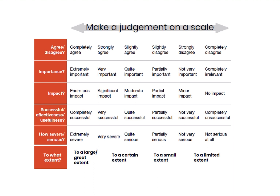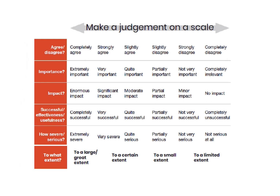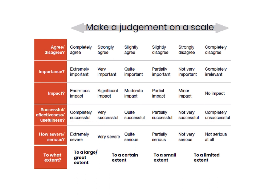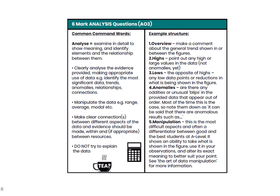The sliding scale shown here has key points to consider — for example, if you're thinking about how successful something is, this scale would talk you through the sorts of phrases you may wish to use. These are good examples of how you can be really clear in your evaluation and avoid those waffly phrases. So next up are your six-mark analysis questions.